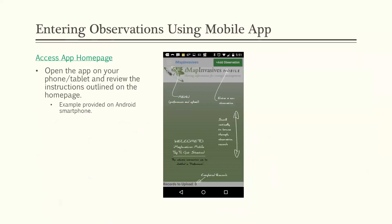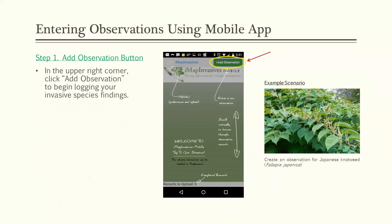Once you're done filling in your preferences, open the app on your phone or tablet. There are brief instructions on the home page showing where various tasks are located. When you're ready, click the 'Add Observation' button in the upper right corner of the app to start logging your invasive species findings. For this example, we'll be creating an observation record for Japanese knotweed.